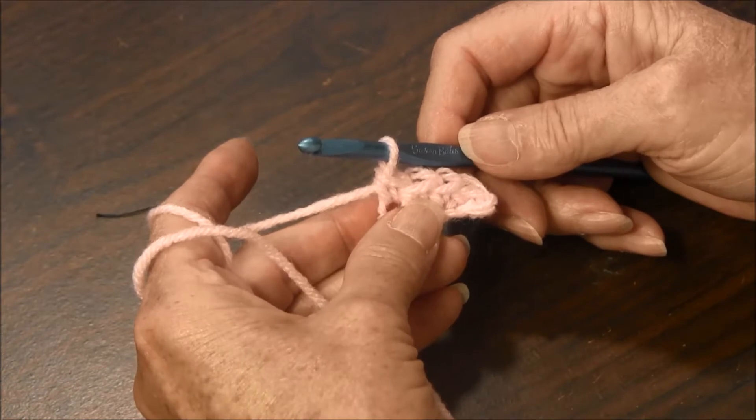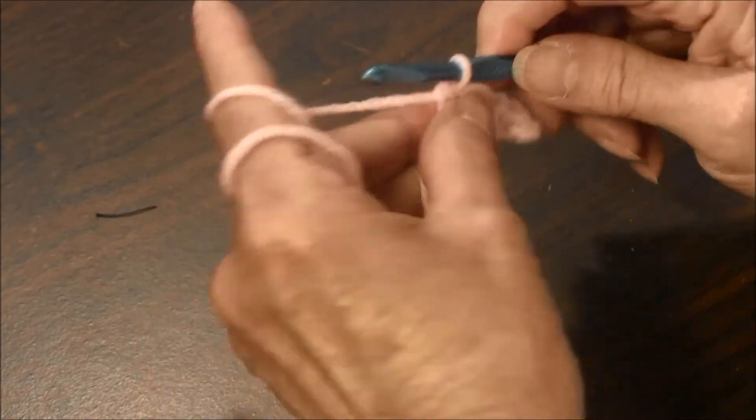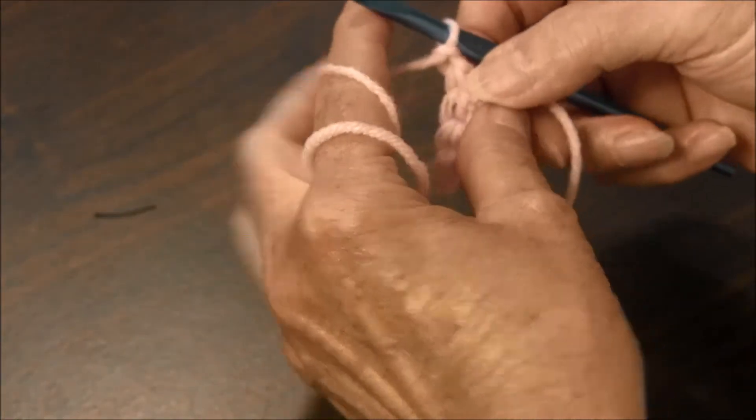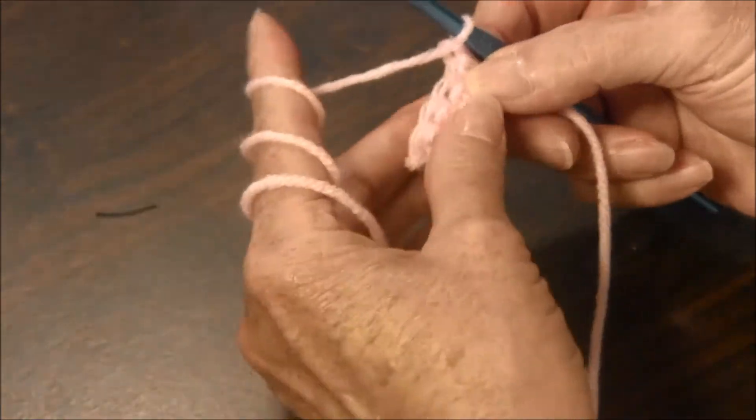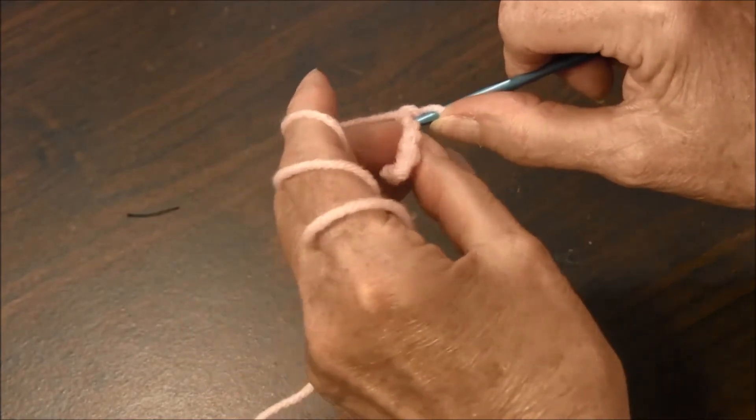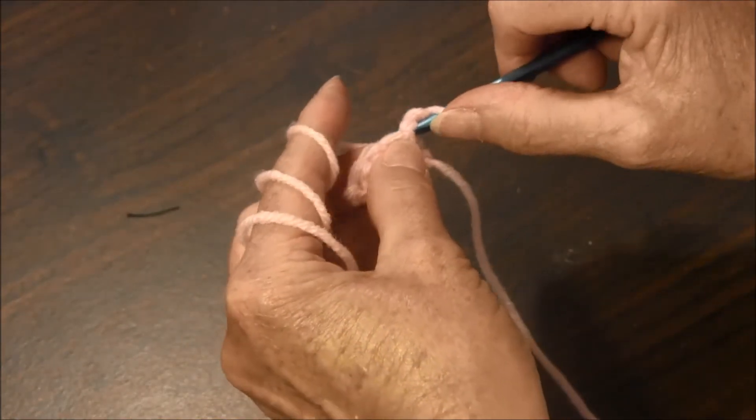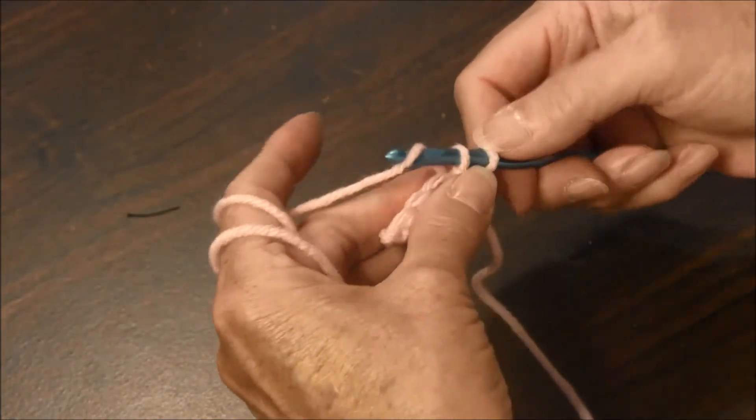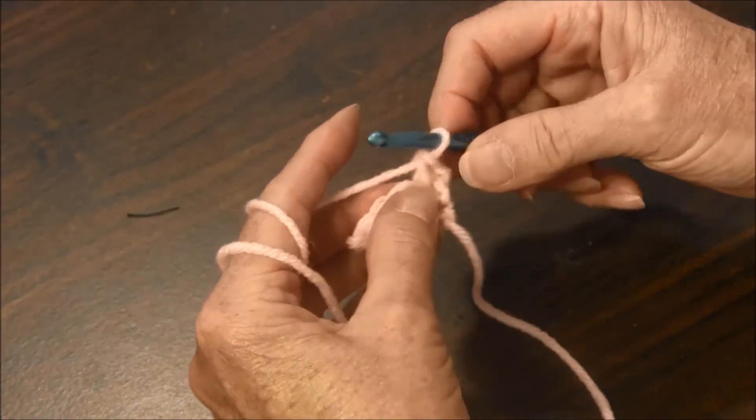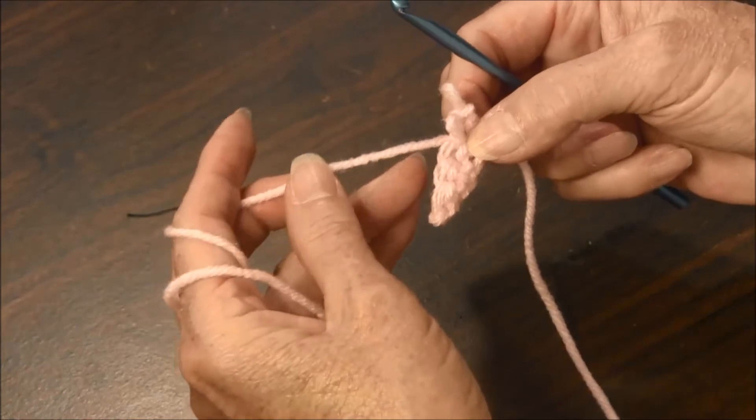If you are working single crochets at the end of the row, chain once, turn, and insert the needle in the first stitch and do your single crochet. Now some people prefer to, I will show you,